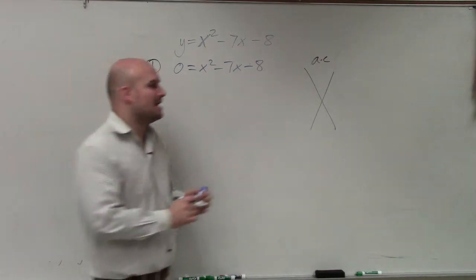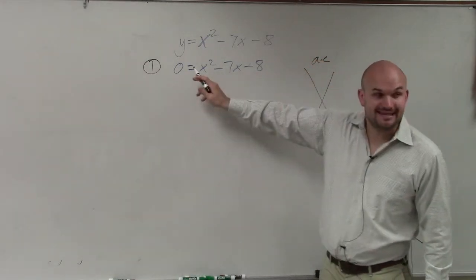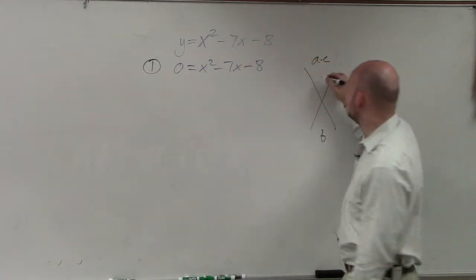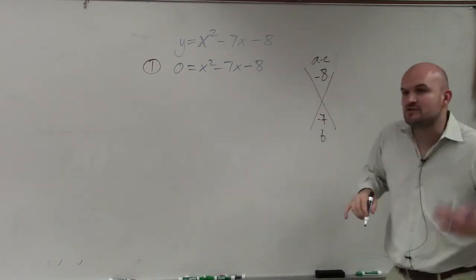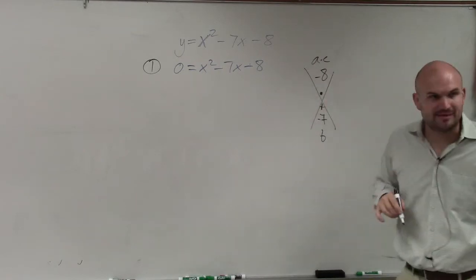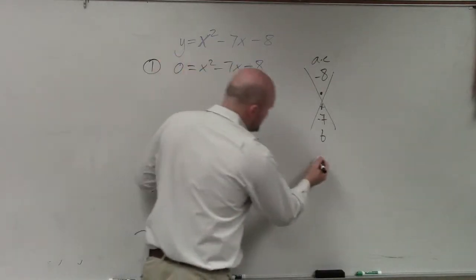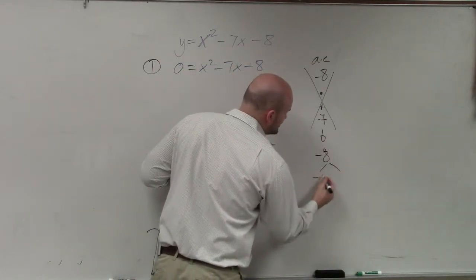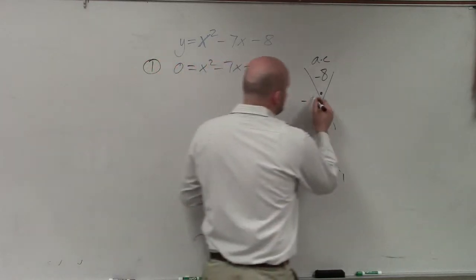So now I'm going to use my diamond method, which I do a times c and then b. A times c, a in this case is 1, b is negative 8, b in this case is negative 7. So what I have is what two numbers multiply to give me negative 8 and add to give me negative 7. This is what we've tried to practice over and over again. So you could say negative 8 times positive 1. So you write those new terms in here.